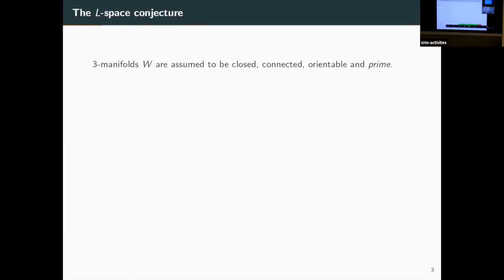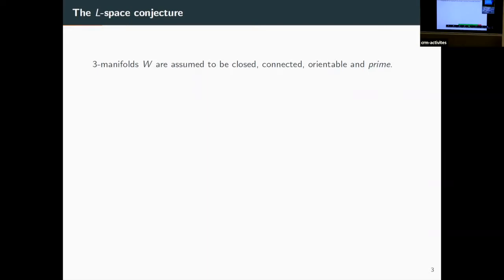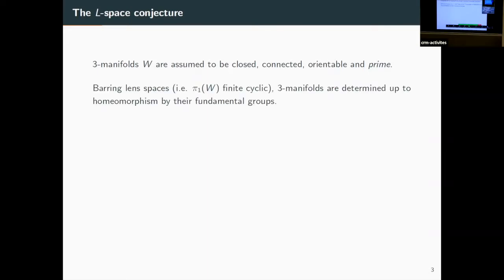Three-manifolds are going to be closed, connected, orientable, and prime. Prime means that if you write them as a connected sum of two manifolds, one of the two has to be the three-sphere. There is a prime decomposition theorem: every compact closed connected orientable three-manifold is a product of primes. That decomposition is unique up to order — closed means compact without boundary.